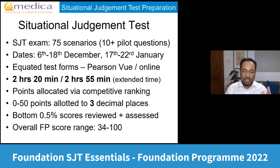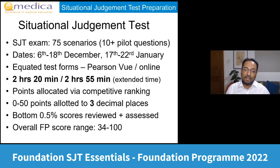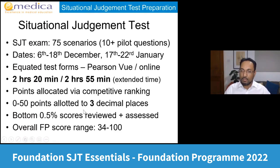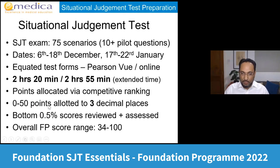Points are allocated via a competitive ranking algorithm. For the SJT part of your ranking, you get between zero and 50 points, allocated to three decimal places — previously two, now three since last year. Anyone in the bottom half percent of scores will be reviewed and must pass a viva-type interview. Unless they pass, they won't be able to join the Foundation Programme that year and would have to repeat the following year. Even then, very few who attend that interview ultimately enter foundation.